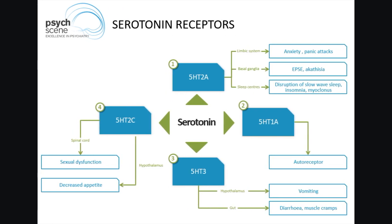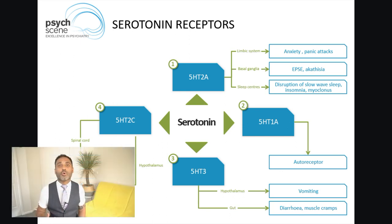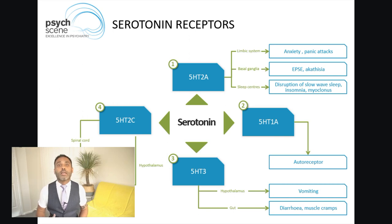The 5-HT2C receptor is also situated in the appetite area of the brain, and therefore an SSRI can result in anorexia — decreased appetite. Next, the 5-HT3A receptor is situated in the hypothalamic nausea area, and therefore an SSRI can result in increased nausea initially. The 5-HT3A receptor is also situated in the gut, and therefore administration of an SSRI can result in diarrhea.